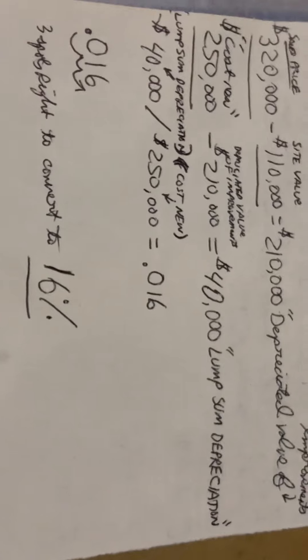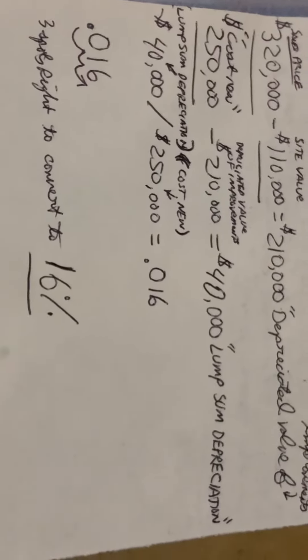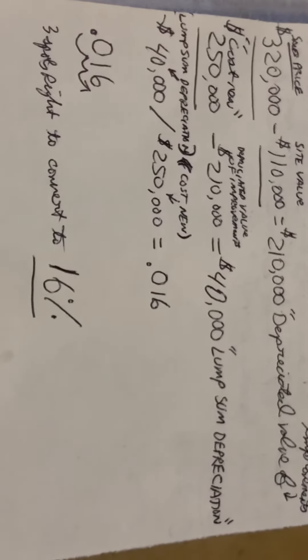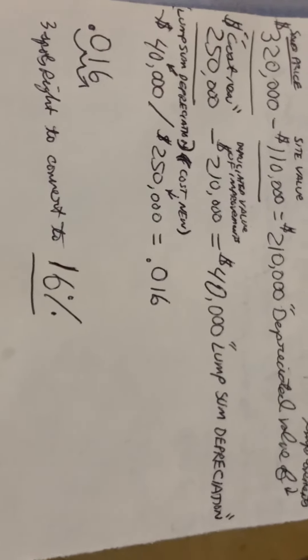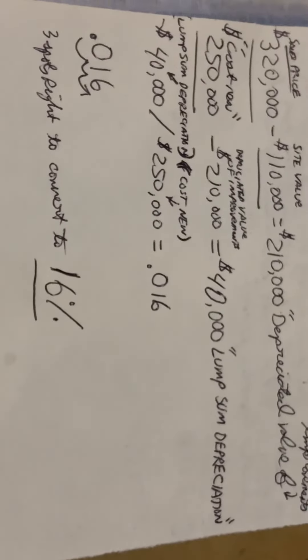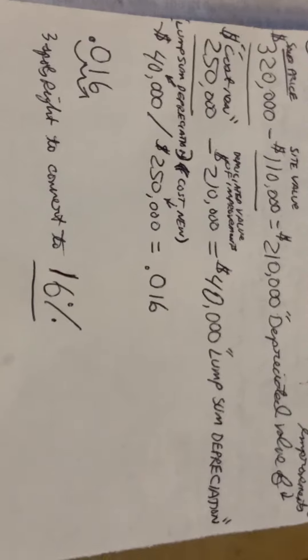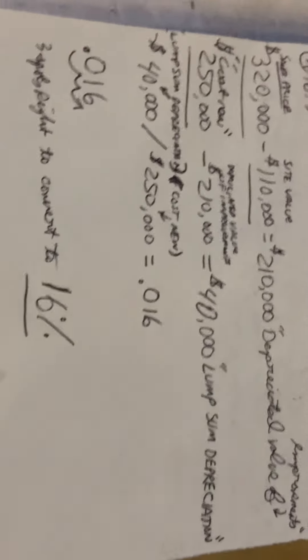And you can call it phase four or not, but all you got to do, 0.16 as a percentage, decimal to percentage is going to be 16%. So it's like three spots to the right to convert it to 16%. And that's your answer.